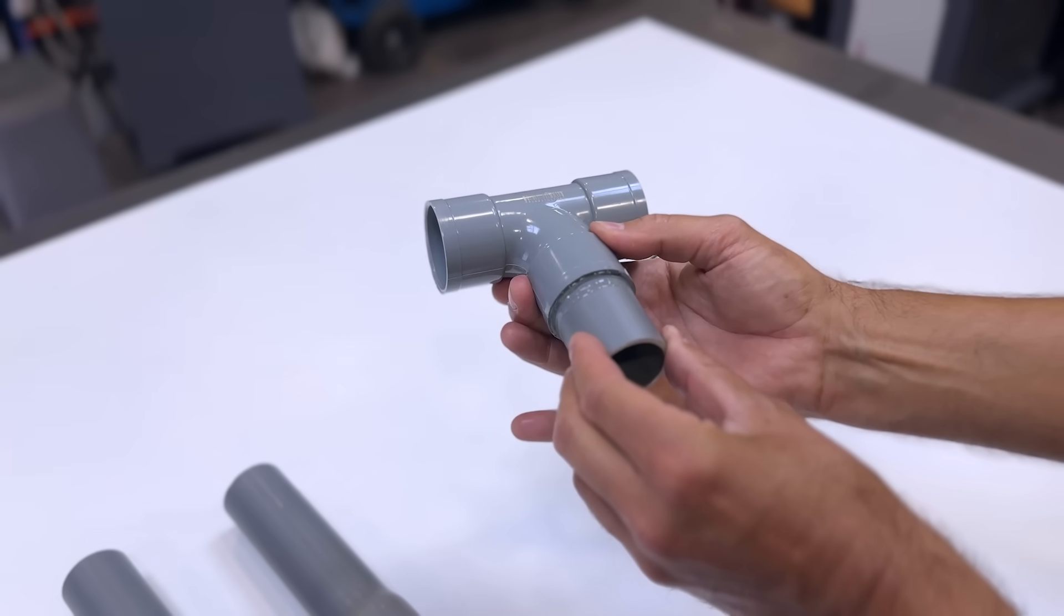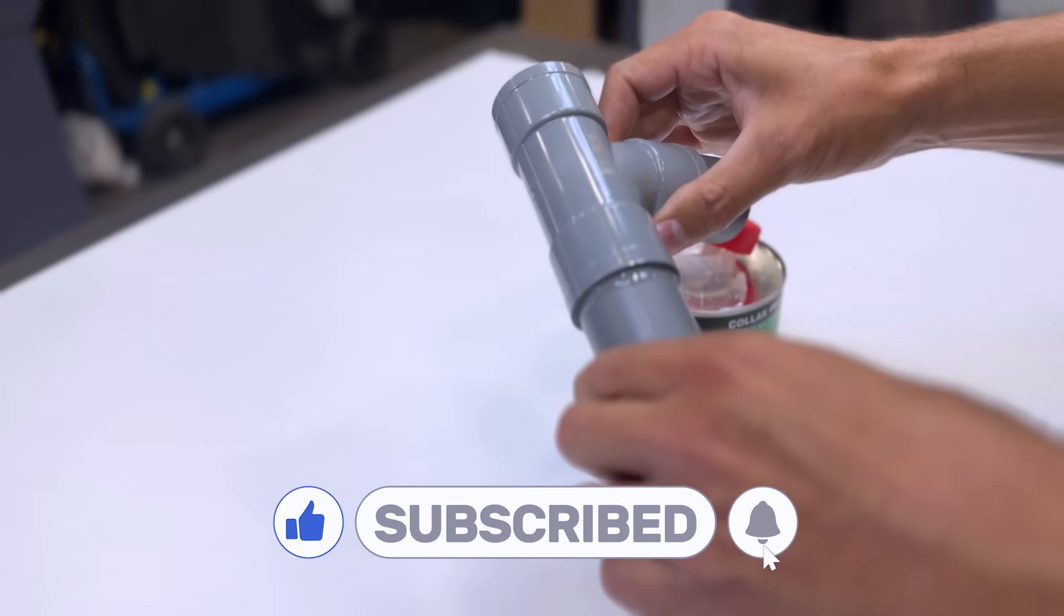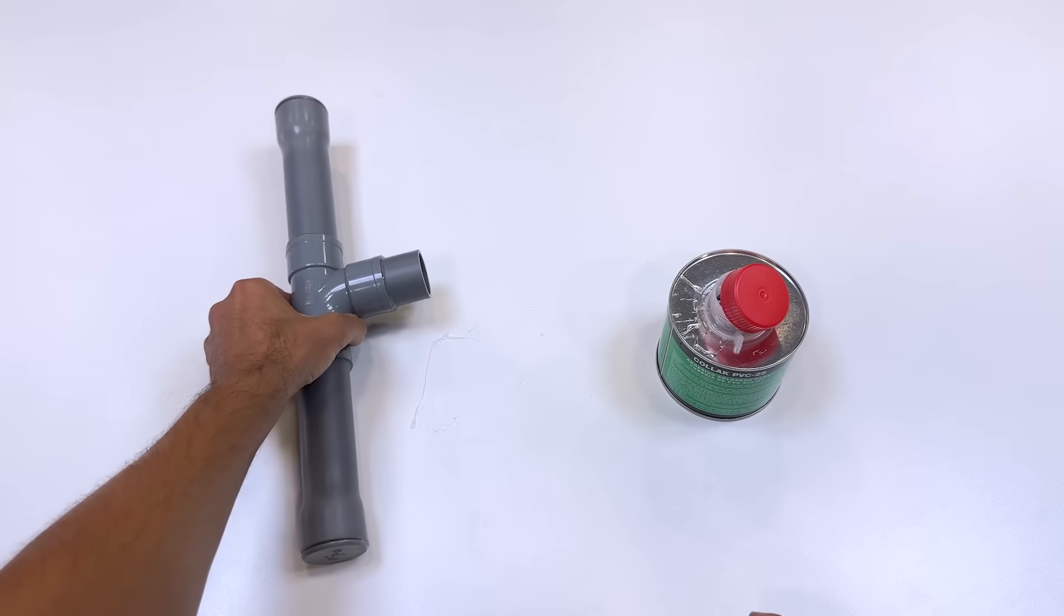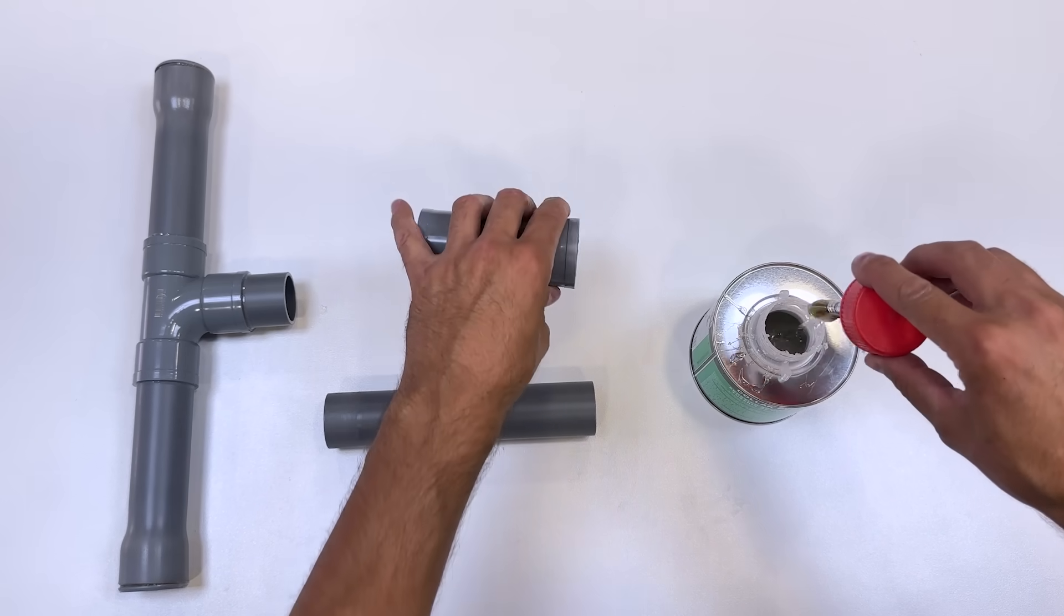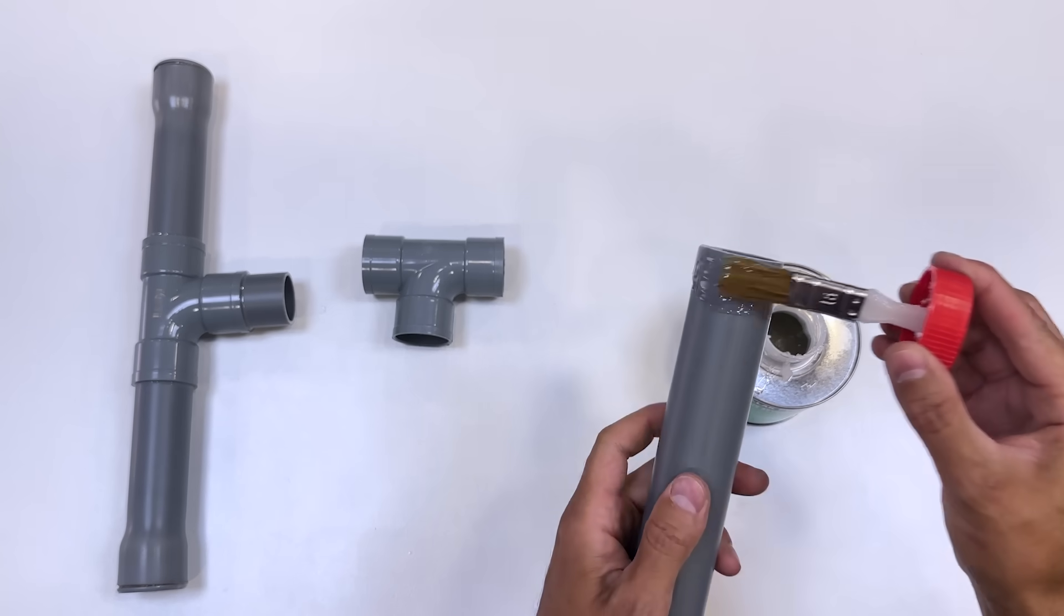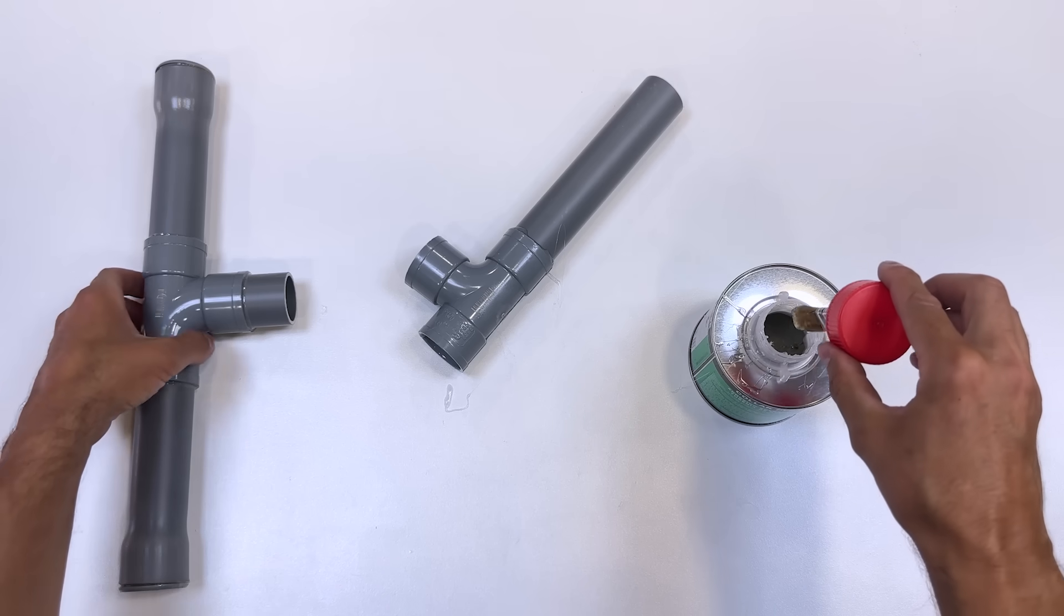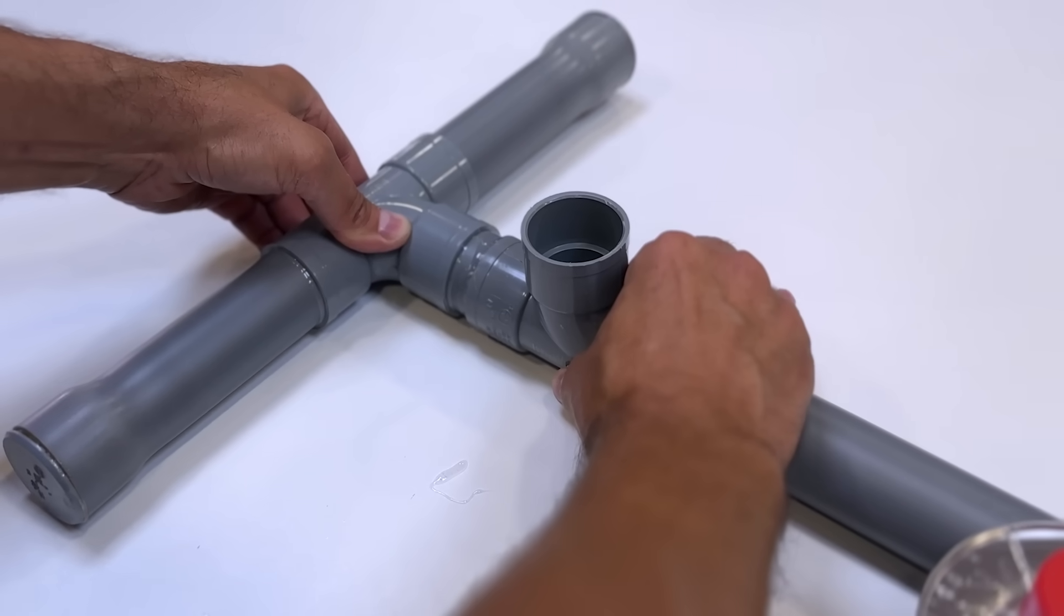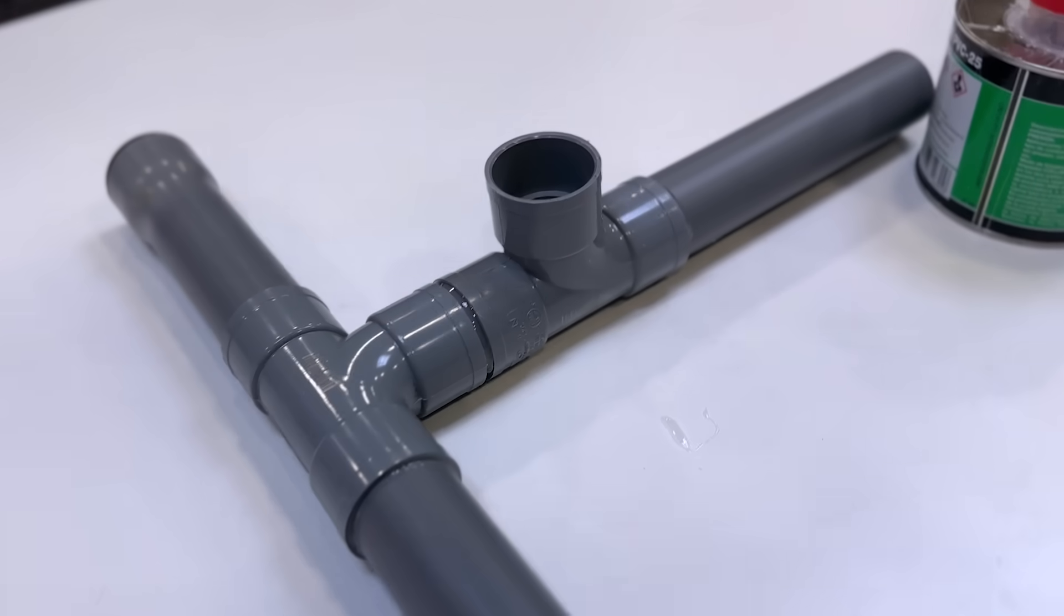We continue joining this T-shaped PVC connection with a small 40 millimeter diameter tube. At the ends of the T we connect the previous tubes. We continue joining these other pieces that will form the base of the water pump. That hole should be perfectly vertical upwards.